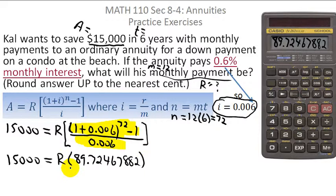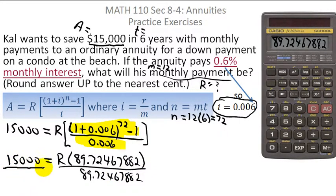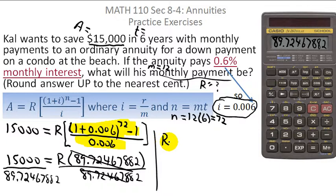Remember, I'm trying to solve for capital R, so I need to divide out this 89.72467882. If I divide it out on the right, I have to do the same thing on the left. When I do that, I will have the periodic payment. So the periodic payment is 15,000 divided by that 89.72467882.